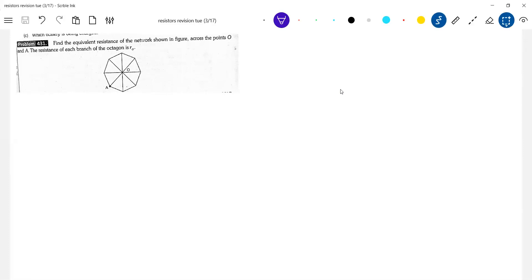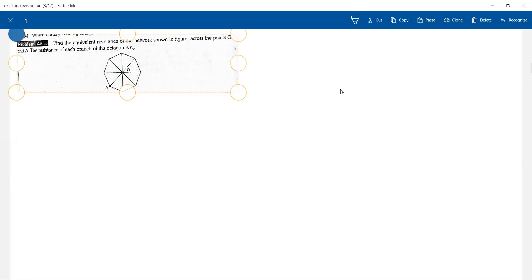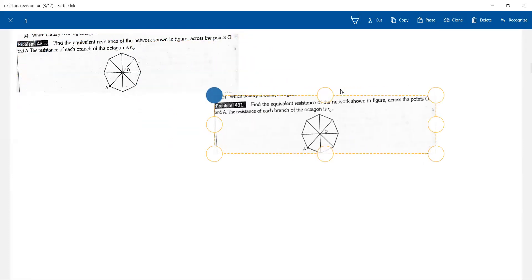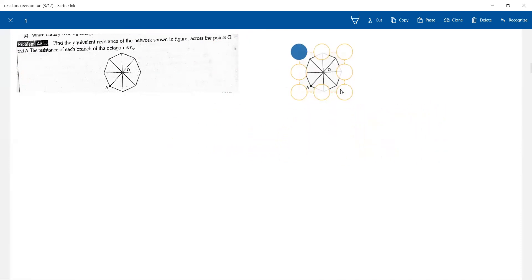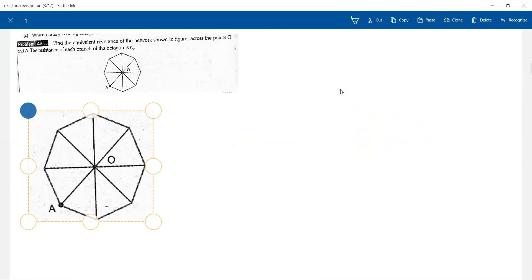Between A and O, it is being asked. We are going to connect a cell. So the resistance of each and every side is R0.